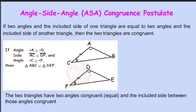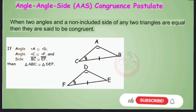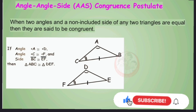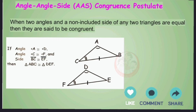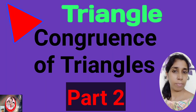Our third rule is Angle Angle Side. When two angles and a non-included side of any two triangles are congruent to each other, then we can say that both triangles are also congruent to each other. In the screen, there are two triangles named ABC and DEF. Angle A is congruent to angle D, angle C is congruent to angle F, and side BC is congruent to EF. So we can say that triangle ABC is congruent to triangle DEF.